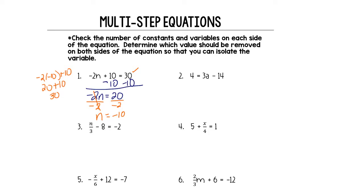We want to get 3a all alone, so I'm going to get rid of negative 14. I've got 4 on the left already. I want to move all the constants over there, so the opposite of minus 14 is plus 14. I'm going to do that exact same thing to each side. We're left with 18 equals 3a. Negative 14 plus 14 cancels. We want to get a alone, so we have to get rid of 3. 3 is multiplying with a. The opposite of multiply is divide, so we divide both sides by 3. 18 divided by 3 is 6, the 3s cancel, and we're left with a equals 6.